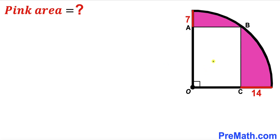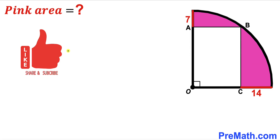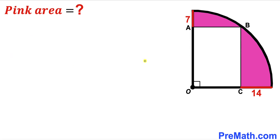Welcome to pre-math. In this video we have got this white rectangle OABC fully inscribed in a quarter circle, such that the center of this quarter circle is O. This horizontal segment is 14 units whereas this vertical segment is 7 units. Our task is to calculate the area of the pink shaded region — this area and this area combined. Please don't forget to give a thumbs up and subscribe, and keep in mind that this figure may not be 100% true to scale. Let's go ahead and get started.